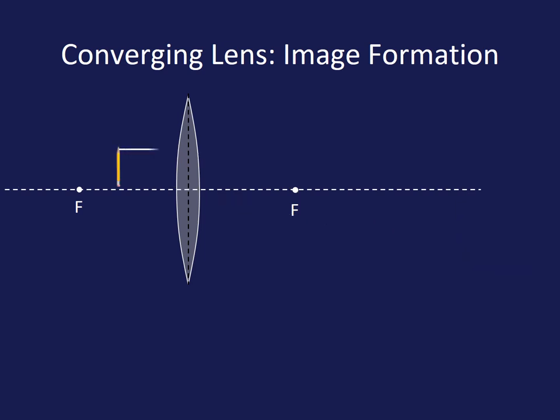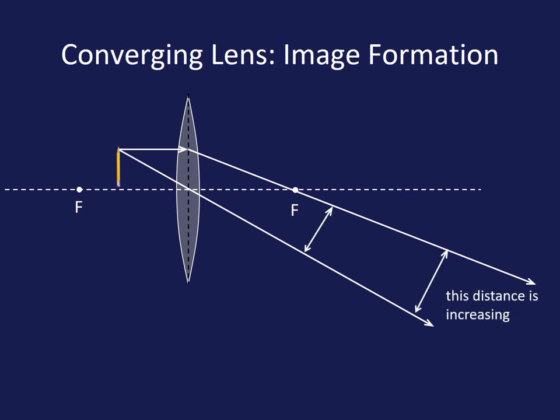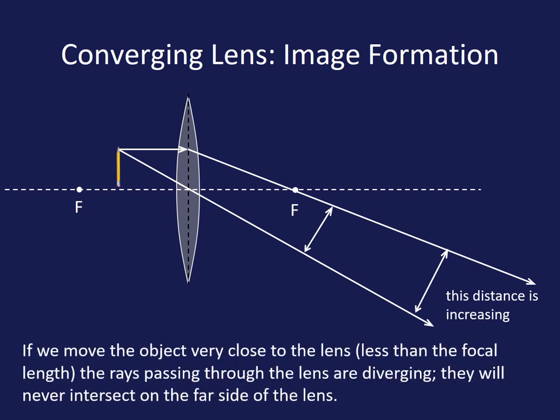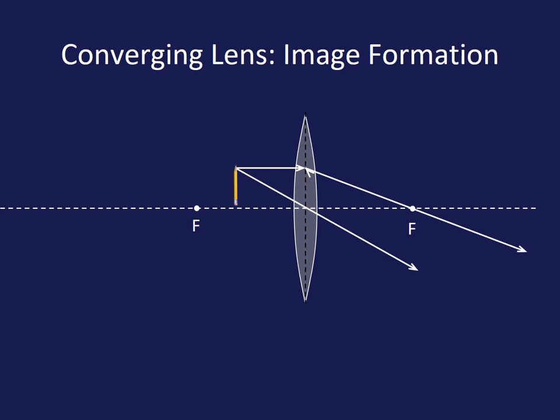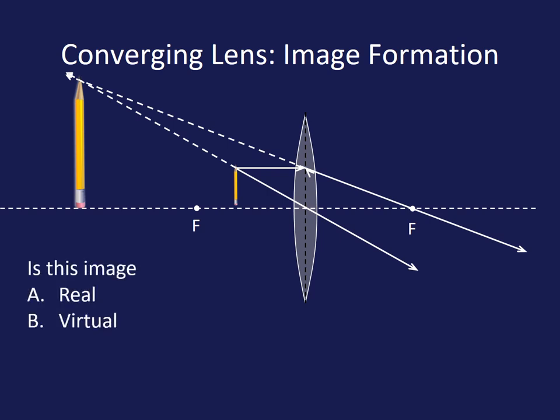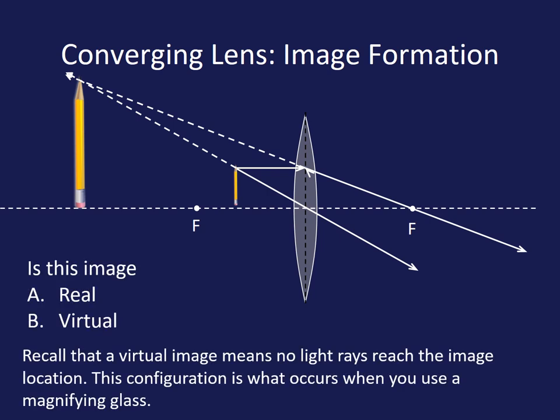Now we've passed our focal point and when we do our two lines, you'll notice that these things are actually moving out from each other. Looks like they're never going to meet going in this direction, so we have to dot backwards. Let's do that. Let's dot our refracted lines backwards and when we do that we'll actually have our image created. You can see it's upright and it's much larger. And we actually have a virtual image now.